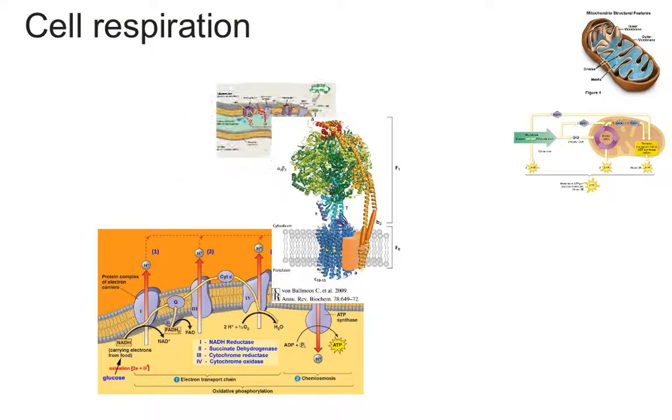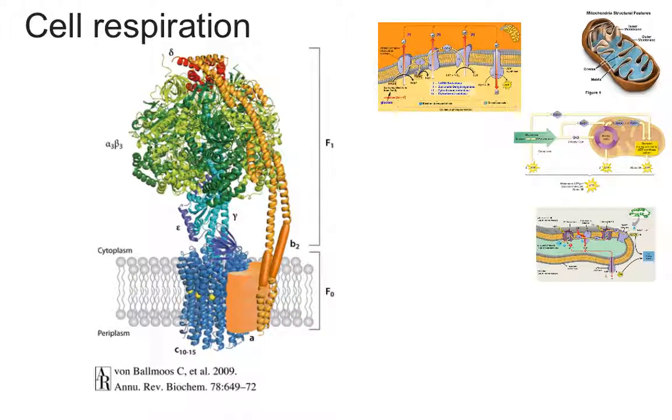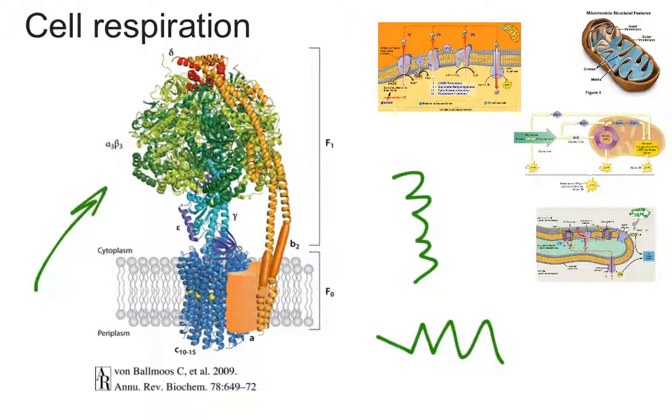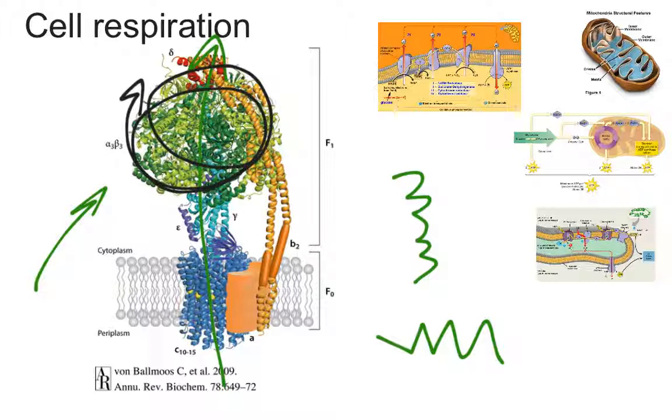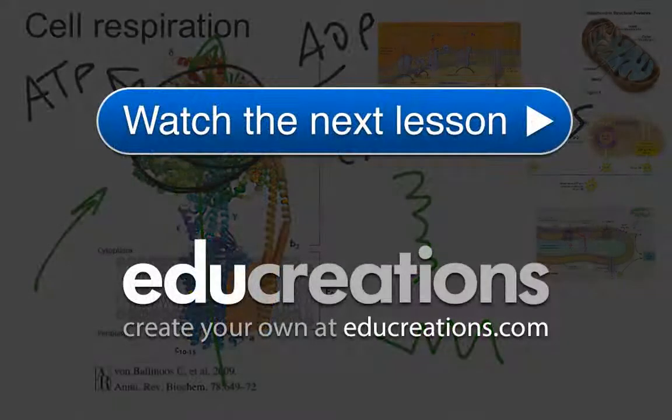ATP synthase itself is an incredibly complex protein. Remember we talked about alpha helices, beta-pleated sheets, primary, secondary, tertiary, and quaternary structure of proteins. This is the actual structure of ATP synthase. Hydrogen ions flow through it, causing it to turn, and as it turns, it takes ADP and converts it into ATP. That particular process of making ATP is called chemiosmosis.